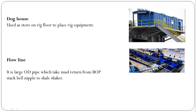Flow line. It is a large-diameter pipe through which the mud returns from the BOP stack bell nipple to the shale shaker. This is the line connected from the BOP stack bell nipple — the drilling fluid will come from this flow line to the shale shaker.